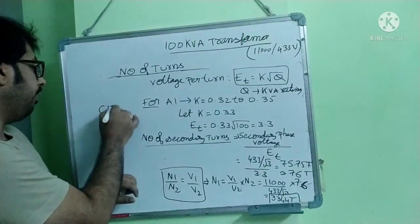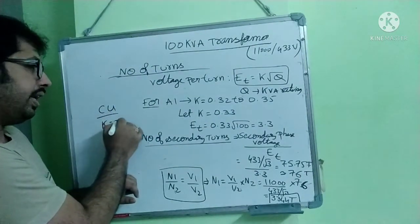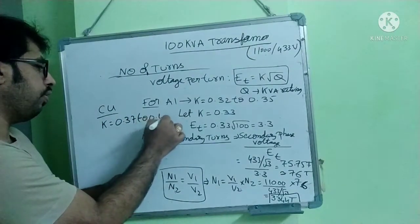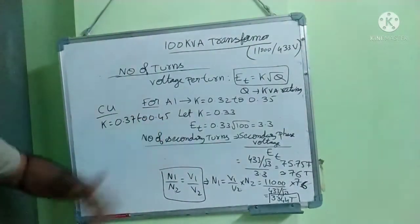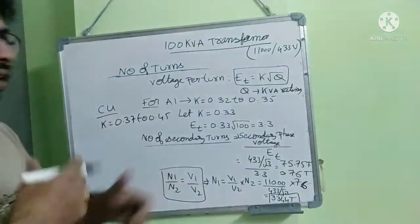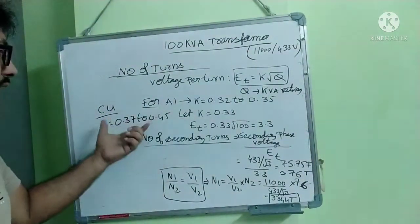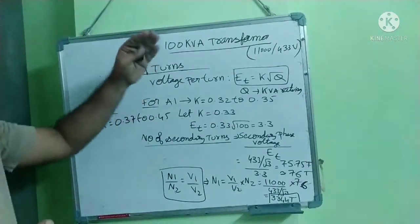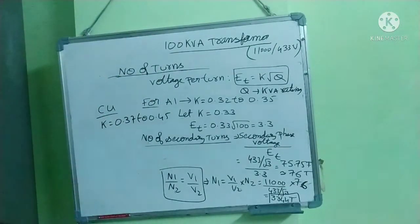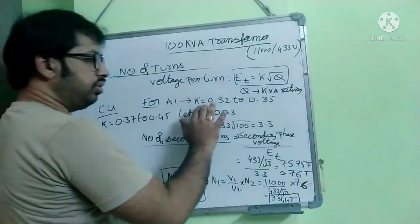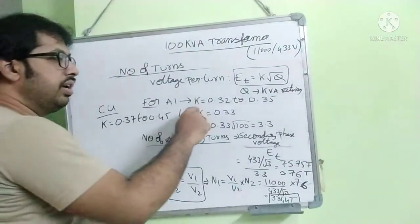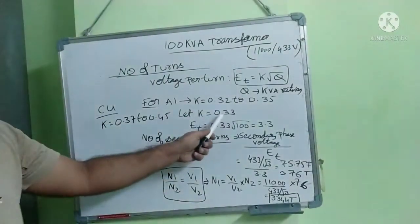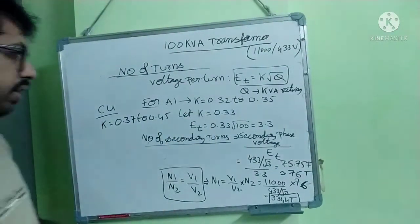For example, for copper, K value should be taken as 0.37 to 0.45. This is through experience, designing many times. If we take this, this is the best value of K where the losses will be under the specification control only. So K value for 100 kVA transformer, since you are using aluminum winding, you take K value as 0.32 to 0.35 in between. So I am taking 0.33.